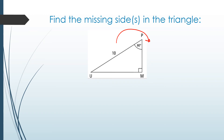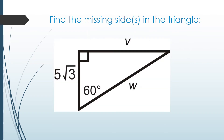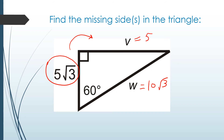Next example: the hypotenuse is 10, so the shortest side is 10 divided by 2 equals 5. The medium side is 5√3. For verification: 5√3 times √3 equals √3 × √3 = 3, and 3 × 5 = 15.